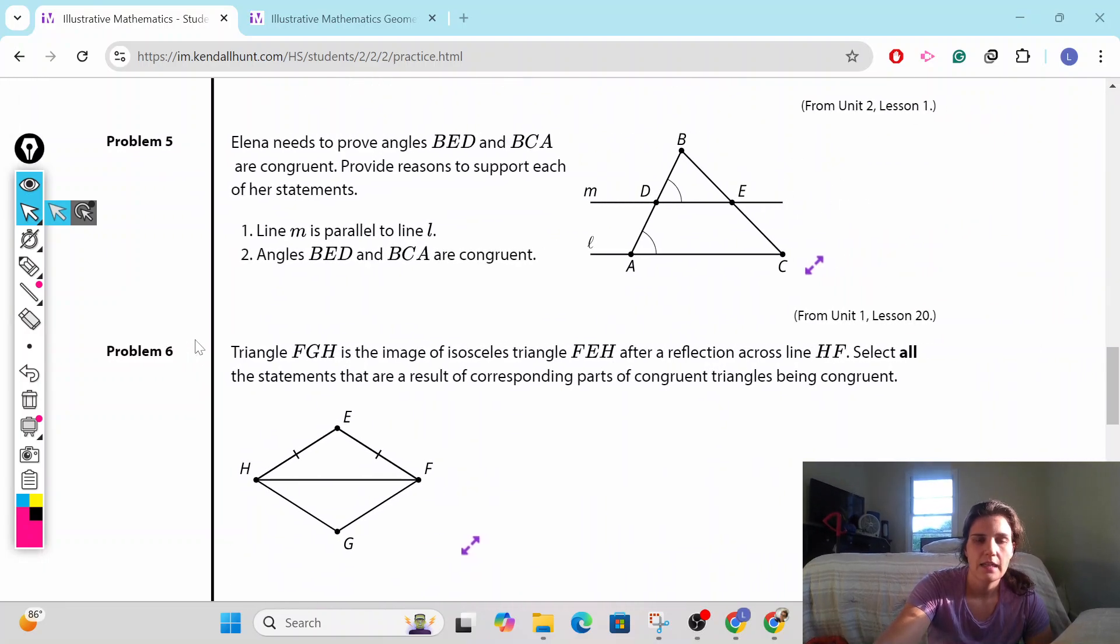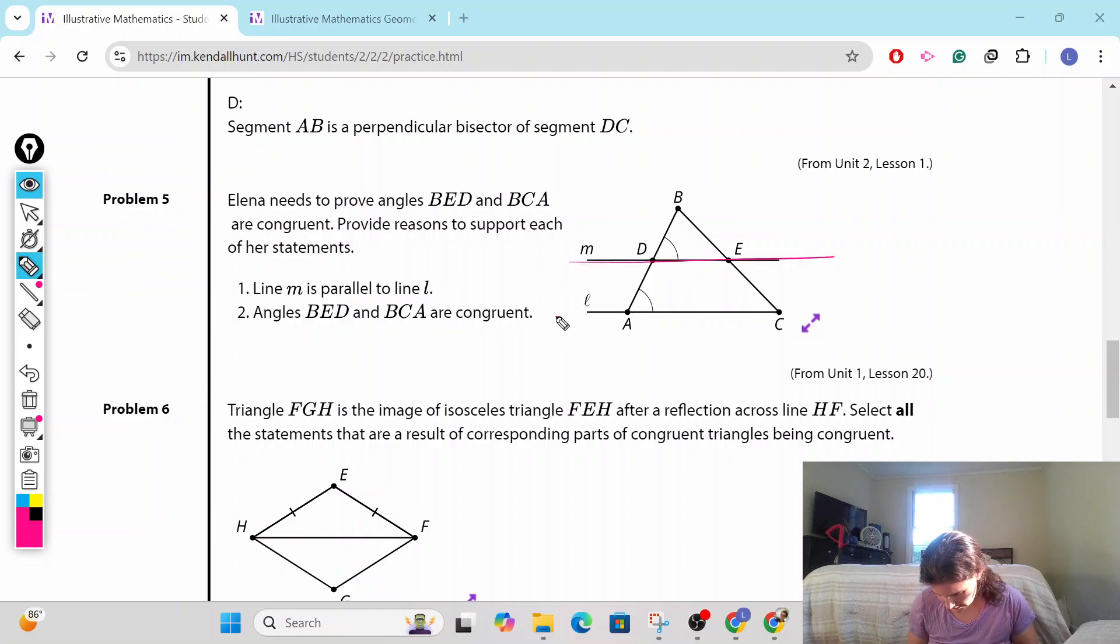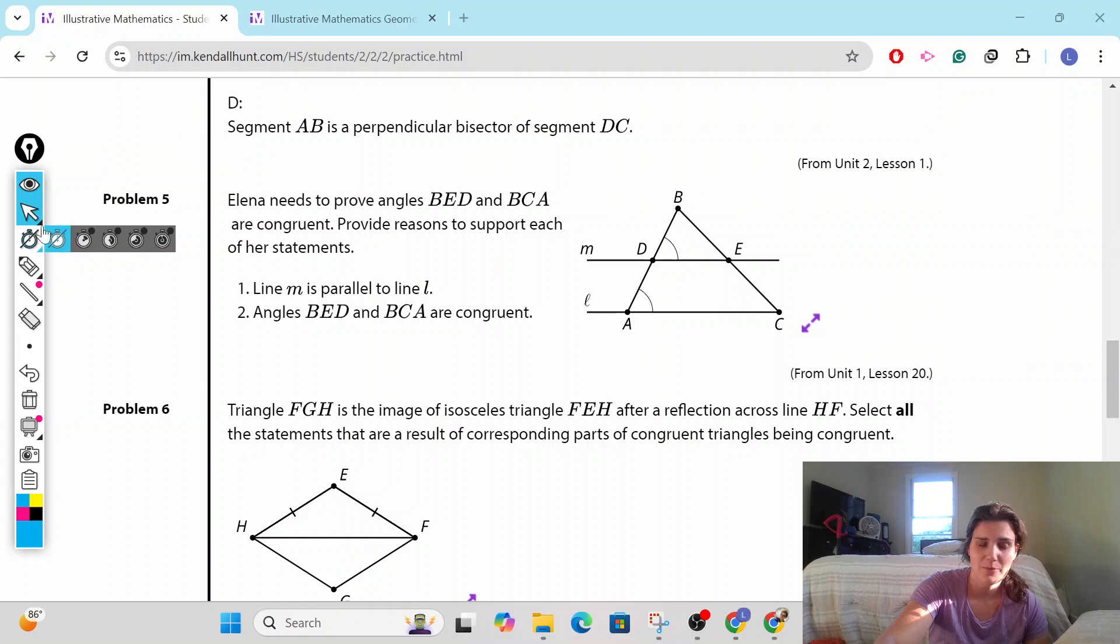Problem number five. Elena needs to prove triangle BED and BCA are congruent. Provide a reason to support each of her statements. Line M is parallel to line L. So this guy and this guy, she says they're parallel. Well, I see they got a pair of corresponding angles that are congruent marked by those little angles. Therefore, the lines are parallel. Angles BED and BCA are congruent. Well, I see a transversal right here through parallel lines. So yep, they are congruent. And we're done. That's it. Let's keep going. Transversals can do a lot, so make sure to memorize your transversal facts.